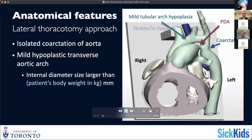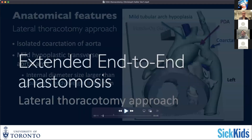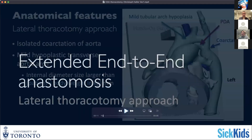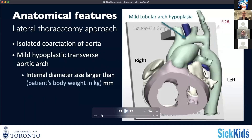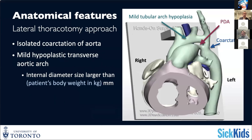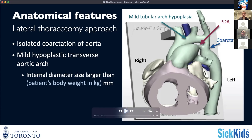As David outlined before in his talk, in a simple coarctation you have a fairly localized narrowing of the aorta. What we would be looking at prior to deciding whether to go from a thoracotomy approach or whether to go for a full sternotomy and patch augmentation of the arch is basically the hypoplasia of the aortic arch.